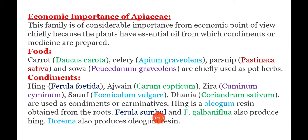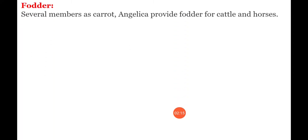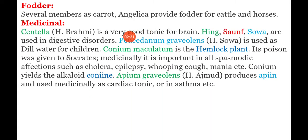Under fodder, several members like carrot and Angelica provide fodder for cattle and horses. These are used as food for cattle and horses.